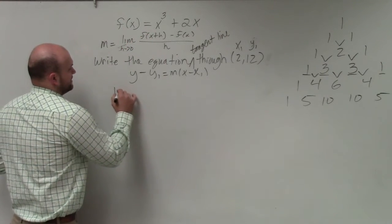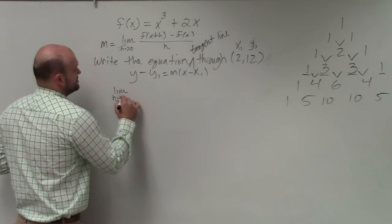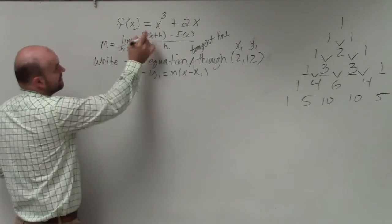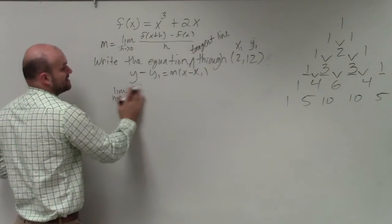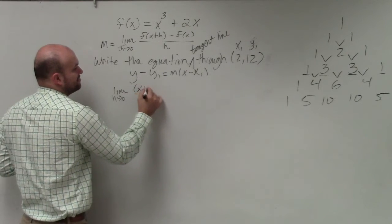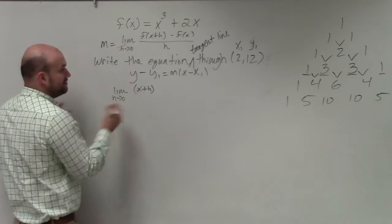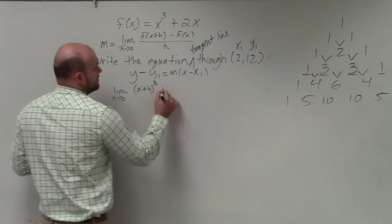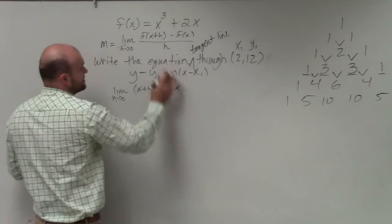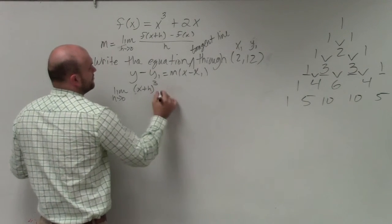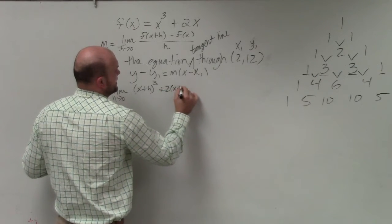So I will have the limit as h approaches 0 of, now again, we're taking in the f of x plus h. So therefore, this is going to be x plus h, right? Just like you would evaluate for anything else, x plus h cubed, plus 2 times x plus h.